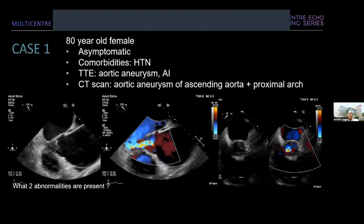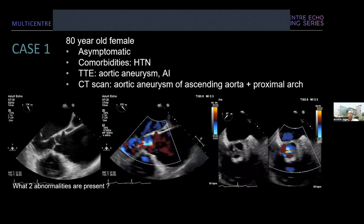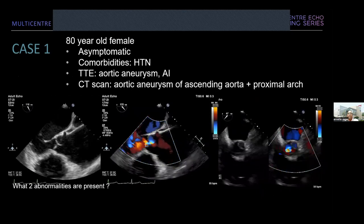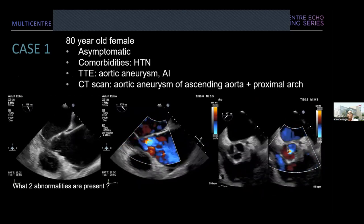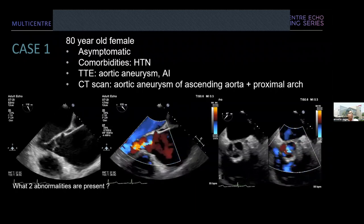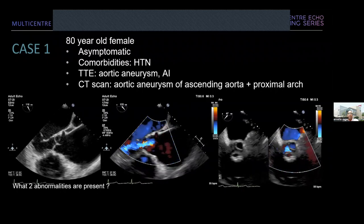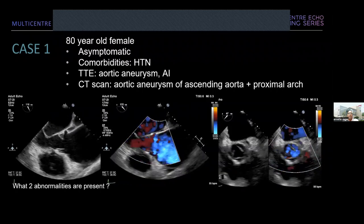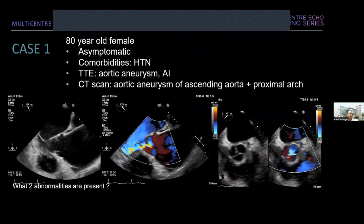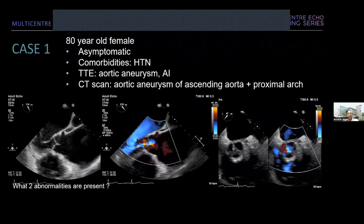The first case is typical of what you might see in your operating room — an 80-year-old female who is asymptomatic, has hypertension, and was found on transthoracic echo to have an aortic aneurysm and aortic insufficiency. CT scan confirmed an ascending aorta and proximal arch aneurysm. Have a look at these clips. One question to answer: what two abnormalities do you see on the 2D image in the mid-esophageal aortic valve long-axis view, and what is the mechanism of AI?